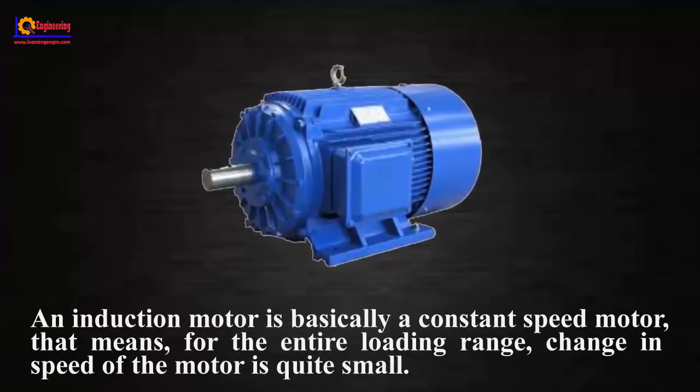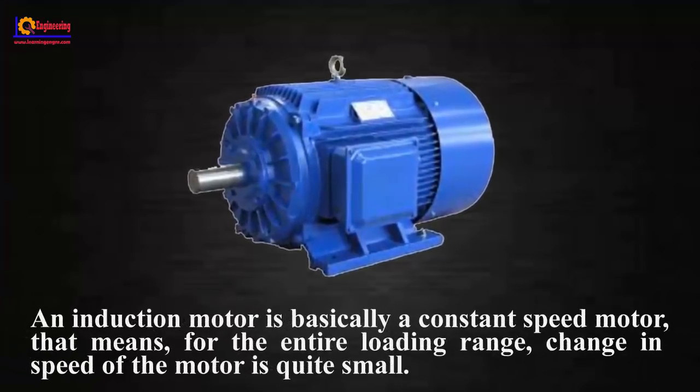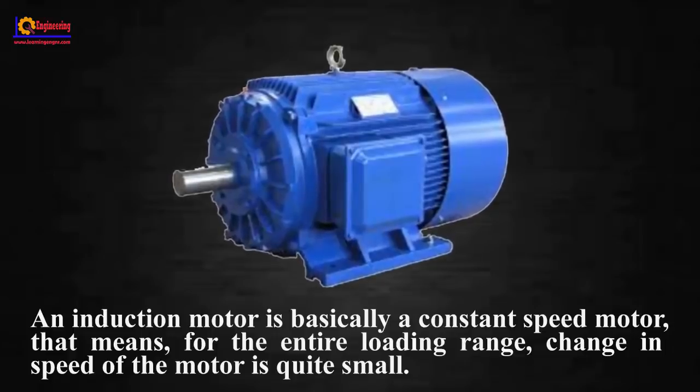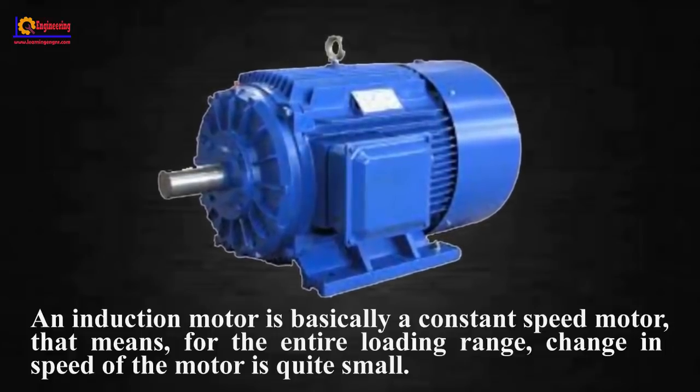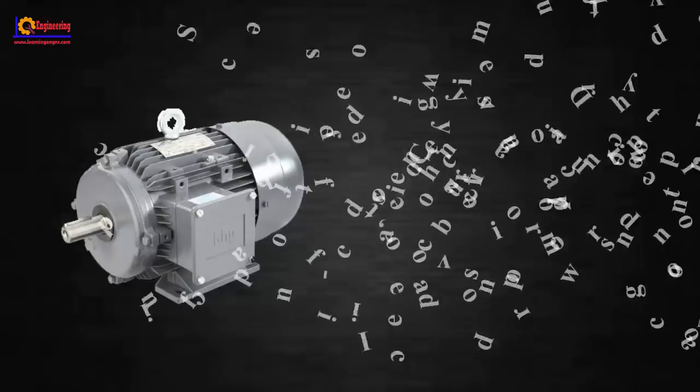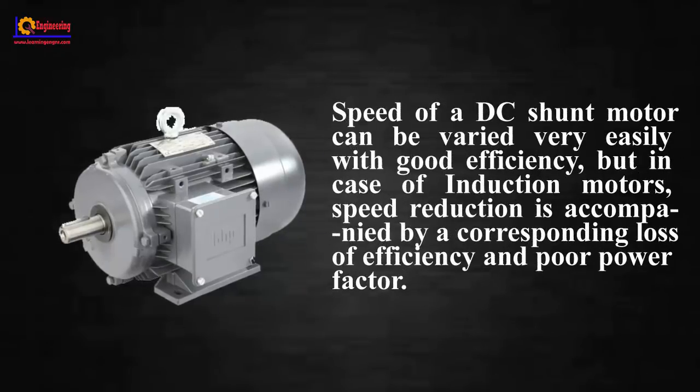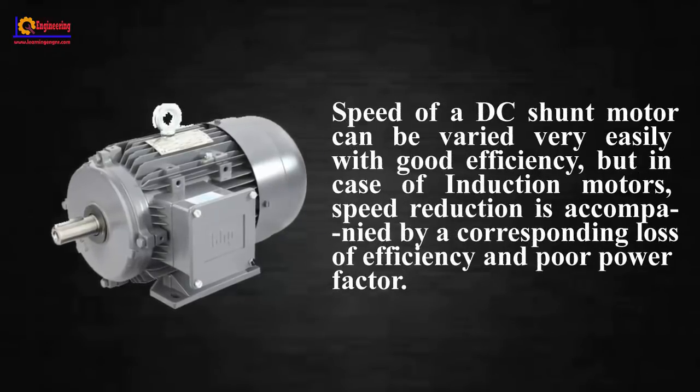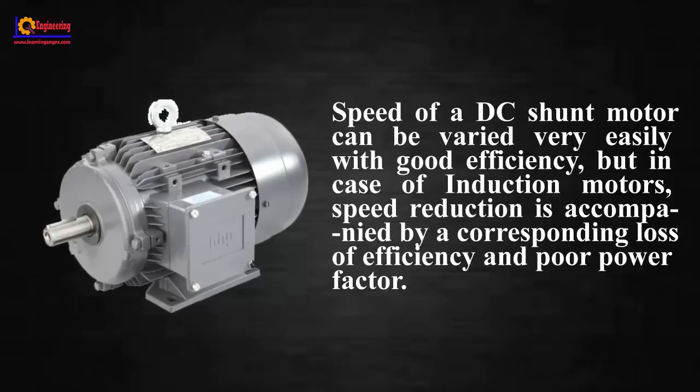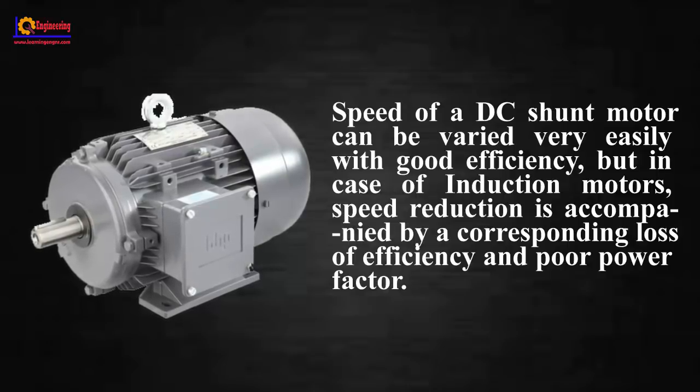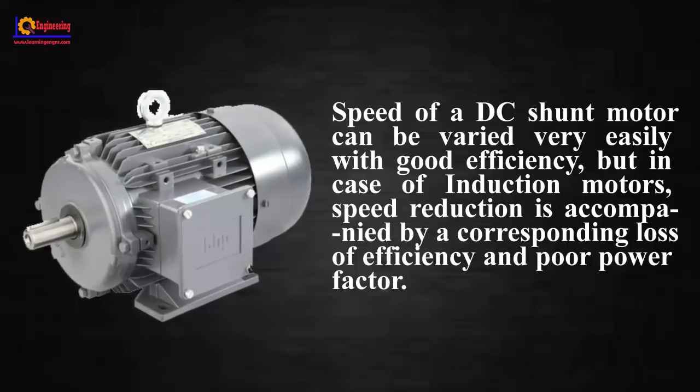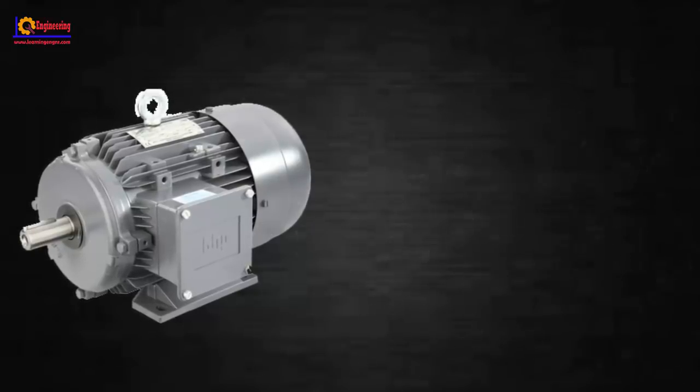An induction motor is basically a constant speed motor. That means for the entire loading range, change in speed of the motor is quite small. Speed of a DC shunt motor can be varied very easily with good efficiency, but in case of induction motors, speed reduction is accompanied by a corresponding loss of efficiency and poor power factor.